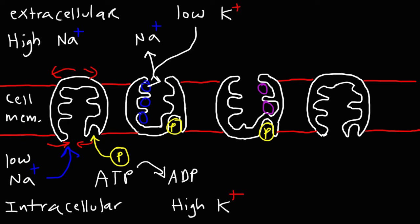The protein is going to lose affinity for the phosphate group at this point. So the phosphate group leaves, and then it undergoes a conformational change — the shape is going to change once more. At the top of the protein pump, it's going to close, and at the bottom, it's going to open. So right now, we have two potassium ions in the pump. After the protein pump changes shape, it's going to lose affinity for the potassium ions, causing them to leave and maintaining a high concentration inside the cell.